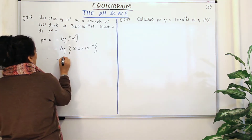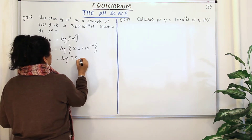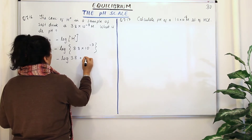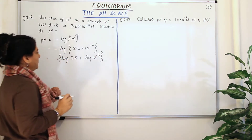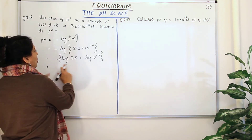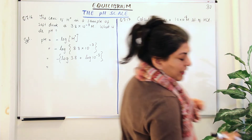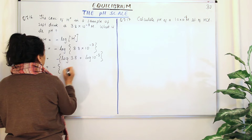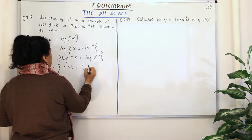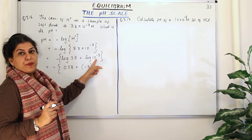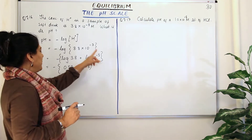So it is −log(3.8 × 10⁻³), which means it is −[log(3.8) + log(10⁻³)]. The log of 3.8 is 0.58, and the log of 10⁻³ is −3, because when you have 10 to any power, that power is the log value. So log(10⁻³) = −3.